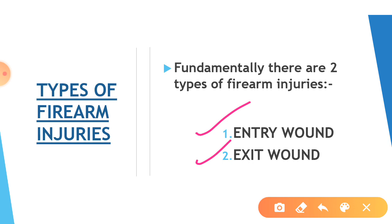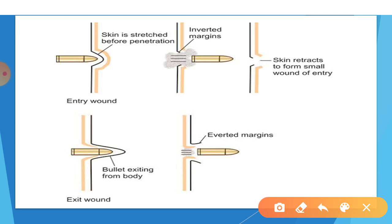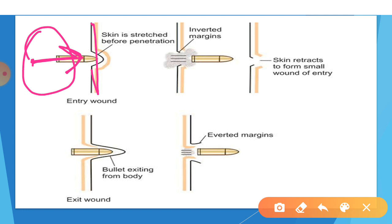Entry wound and exit wound are the basic injuries caused by firearms. Now there can be deformities, bullet problems, or deflection, leading to different types of injuries. We will cover those later. First we will see entry wound and exit wound. Here you can see the diagram — the bullet entering is the entry wound. When a bullet enters living tissue, it puts pressure on it and also has a spinning motion.